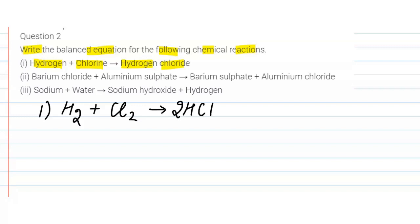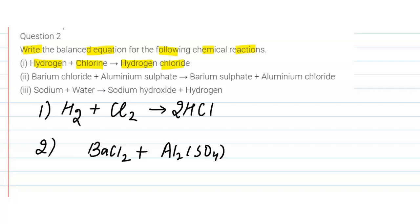In the second equation, we have barium chloride (BaCl₂) and aluminum sulfate (Al₂(SO₄)₃), which gives barium sulfate (BaSO₄) plus aluminum chloride (AlCl₃). Now we will balance the equation. We have one atom of barium on the left-hand side and one on the right.